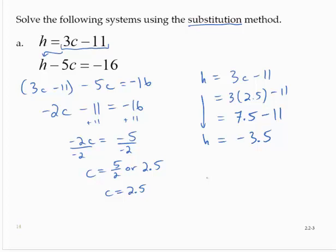So the solution of the system, in alphabetical order, would be (2.5, -3.5).